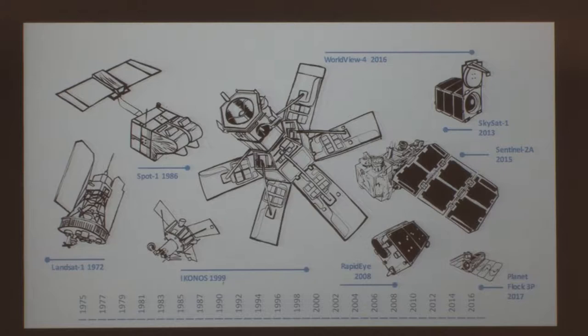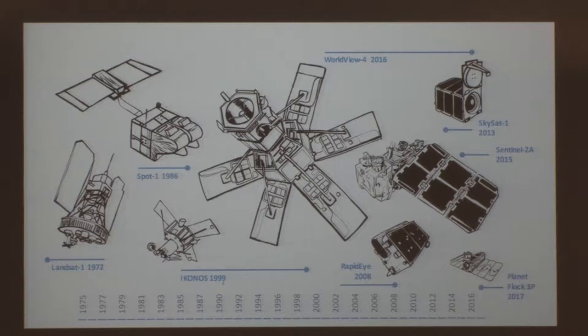Since that time, we've seen also the launch of the Sentinel program — here Sentinel-2A, launched in 2015, with its companion satellite launched not long after — enabling five-day revisit at 10 meters per pixel. That's a huge step change when it comes to free sources of data that anyone in the world can access. On the commercial side, we've seen improvements in spatial resolution including exquisite telescopes by Digital Globe, most recently World View 4, as well as the SkySat constellation, which recently became part of Planet.